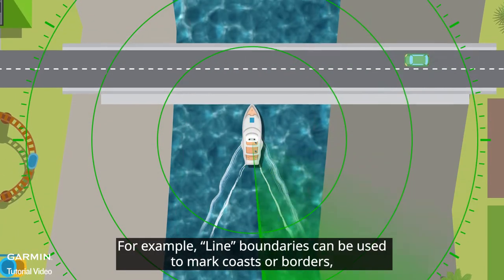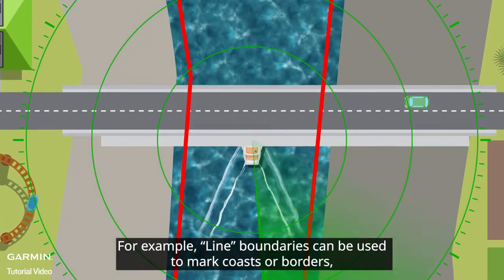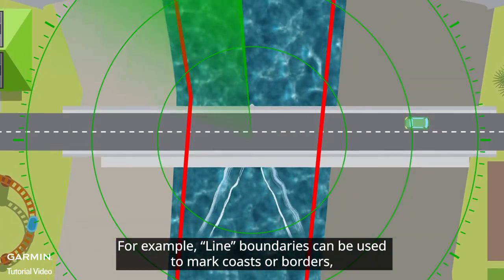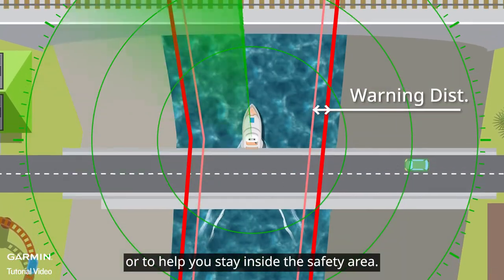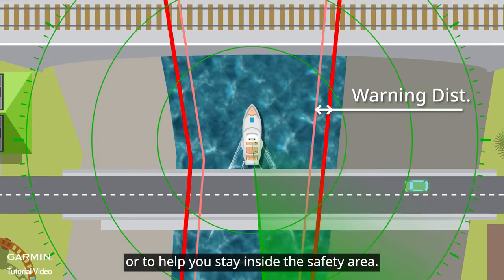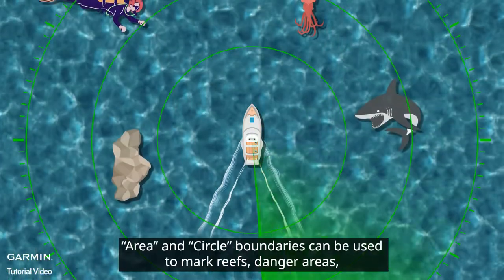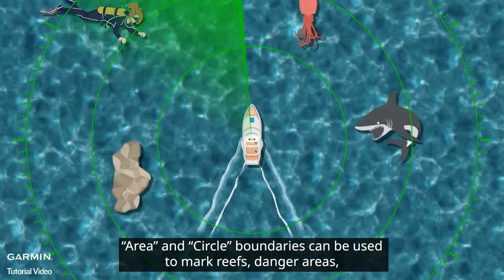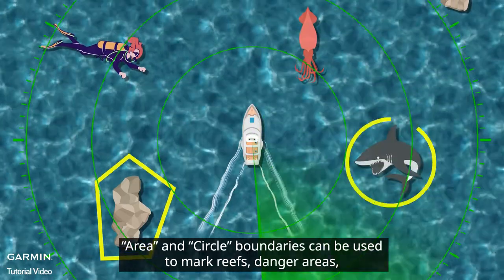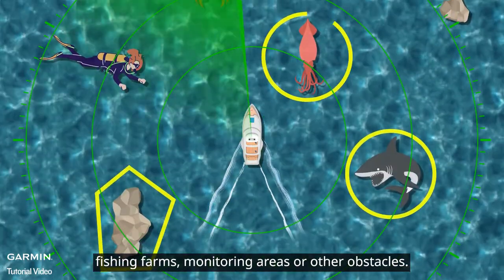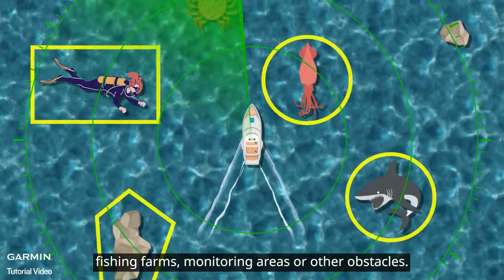For example, line boundaries can be used to mark coasts or borders, or to help you stay inside the safety area. Area and circle boundaries can be used to mark reefs, danger areas, fishing farms, monitoring areas, or other obstacles.